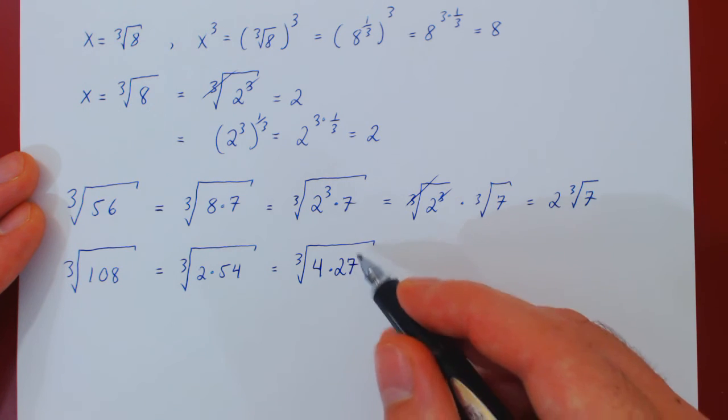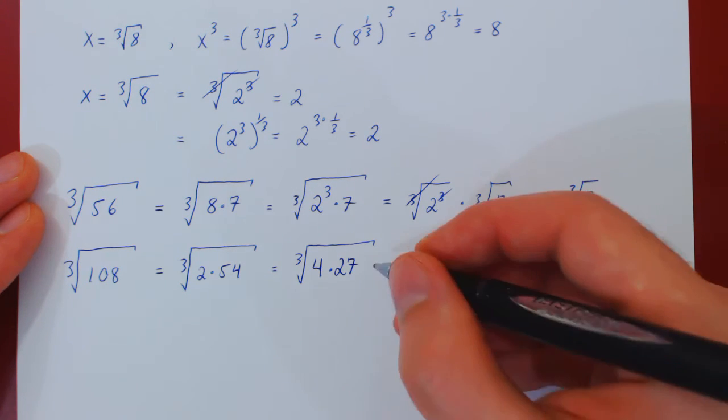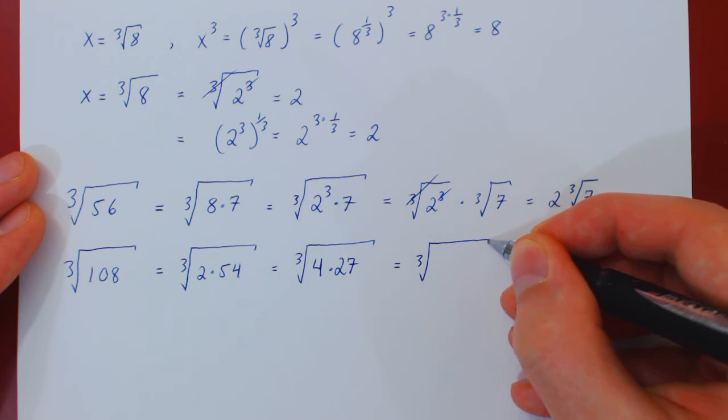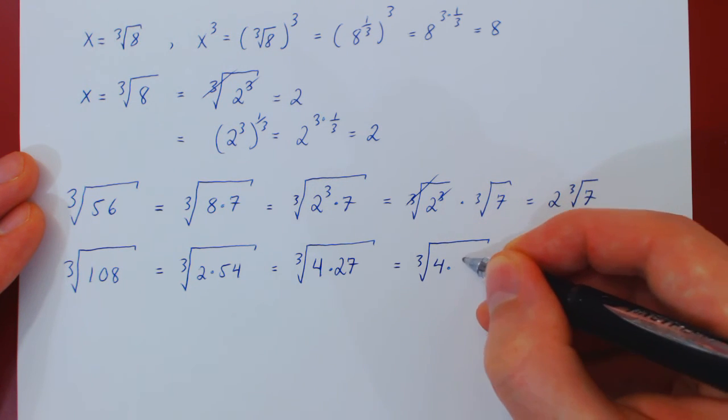And this is interesting now because 27, of course, is a perfect cube. It is 3 cubed. So we have 4 times 3 cubed.